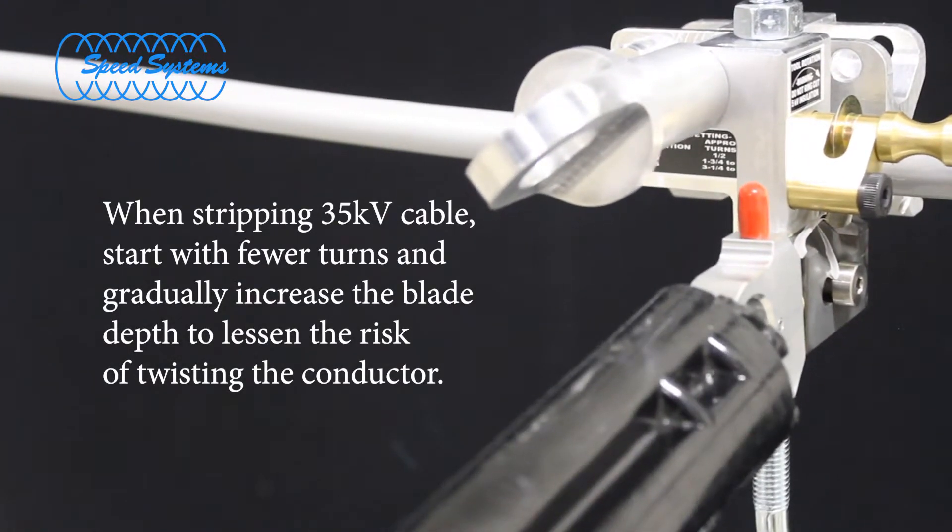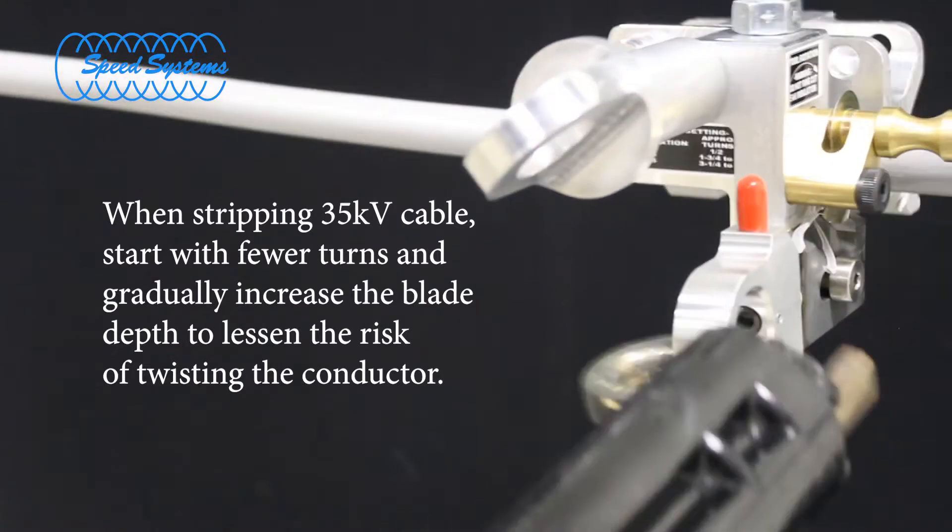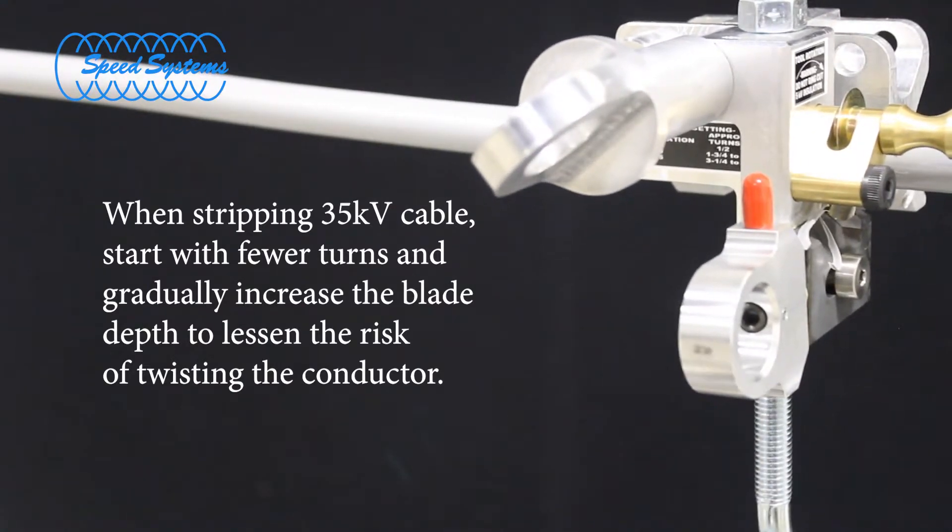For 35kV cable, start with fewer turns for the first revolution and gradually increase the depth of cut to lessen the risk of twisting the conductor.